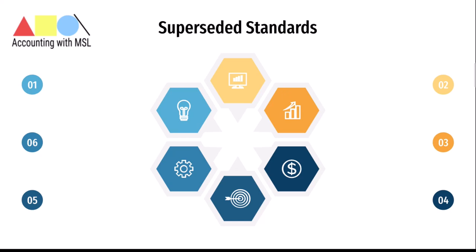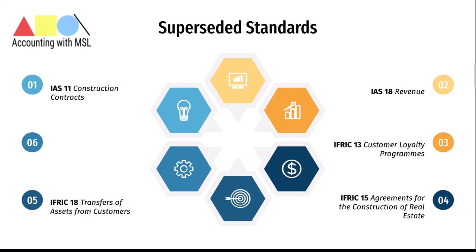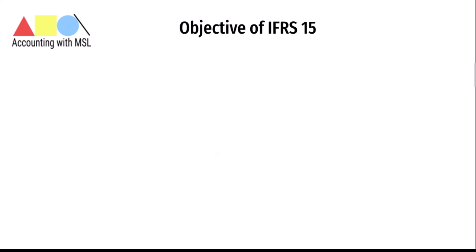This new IFRS 15 Revenue from Contracts with Customers standard replaces or supersedes a number of standards and interpretations. These include IAS 11 Construction Contracts, IAS 18 Revenue, IFRIC 13 on Customer Loyalty Programs, IFRIC 15 on Agreements for the Construction of Real Estate, IFRIC 18 on Transfers of Assets from Customers, and SIC 31 on Revenue and Barter Transactions Involving Advertising Services. All of these have been superseded or replaced by IFRS 15.